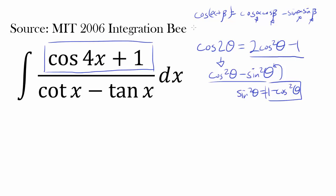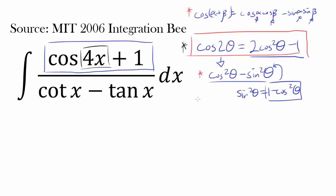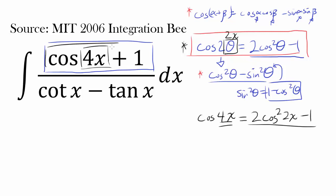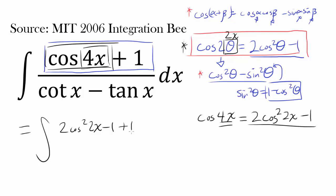In our case, instead of 2θ, we have 4x, so θ is 2x, because 2 times 2x gives 4x. Therefore cosine of 4x equals 2 cosine squared of 2x minus 1. Plugging this into the numerator, 1 plus cosine 4x becomes 2 cosine squared 2x minus 1 plus 1, and the negative 1 and positive 1 cancel out, leaving us with 2 cosine squared of 2x in the numerator.